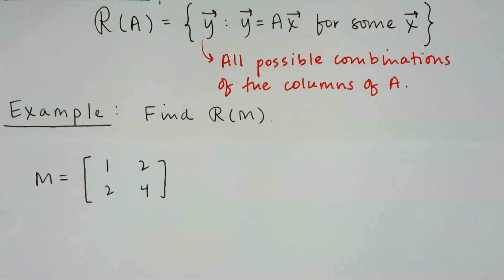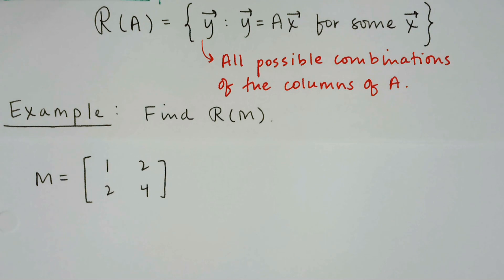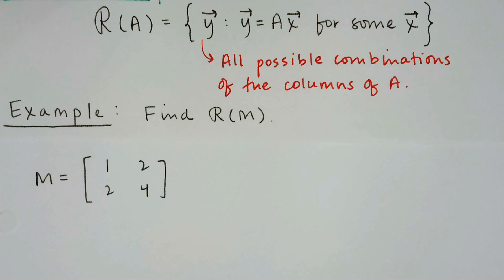For the first one I've got this relatively simple matrix M, which is [1, 2; 2, 4]. You should be looking at this and see that this is clearly a singular matrix — its columns are linearly dependent. If we think about all possible combinations of the columns, we should get a vector where the second component is twice the first component, giving us two-dimensional vectors back.